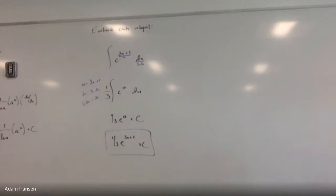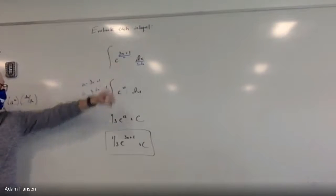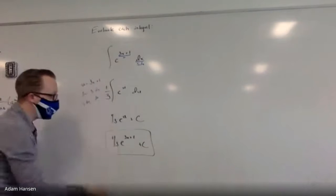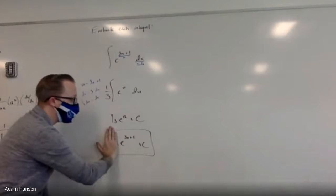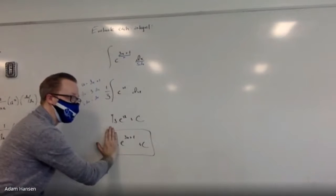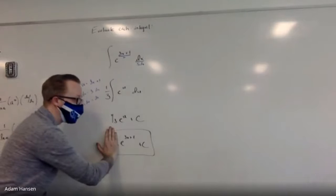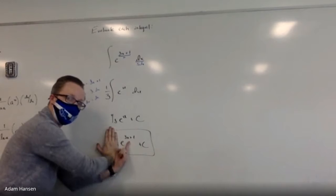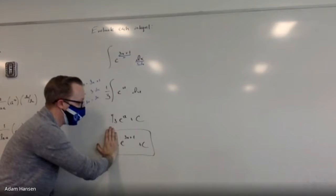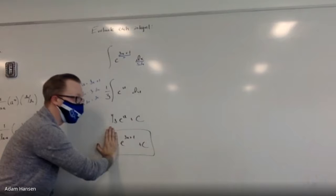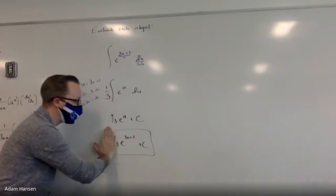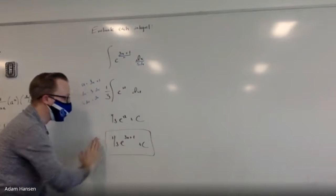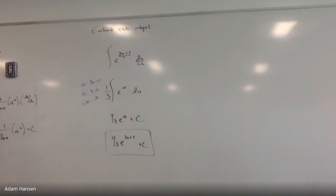How can you always check your work on anti-derivatives? The derivative of e to the 3x plus 1 would be e to the 3x plus 1 times 3, because the derivative of 3x plus 1 is 3. So if the derivative of e to the 3x plus 1 is e to the 3x plus 1 times 3, the extra one-third out in front brings it back down to just e to the 3x plus 1.